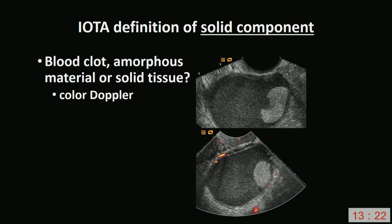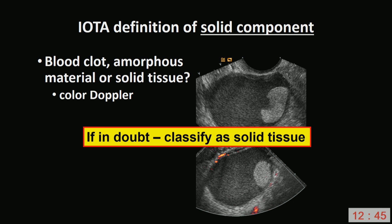Another trick — not mentioned in any IOTA document — is to look at the contour of the suspicious structure. If the contour is clearly concave, it is probably a blood clot, since solid tissue usually does not have a concave contour. Now, if after applying all these tricks you still don't know if you are dealing with solid tissue or something else, you should classify the structure as a solid component, because worst case scenario rules.